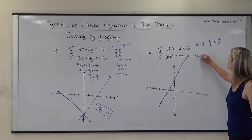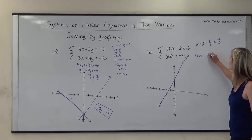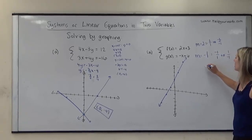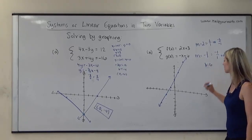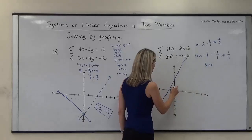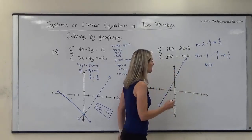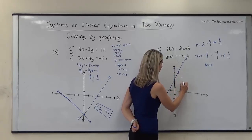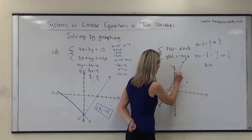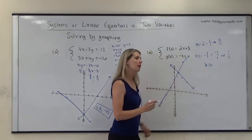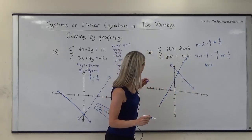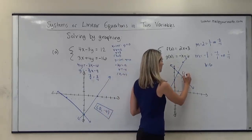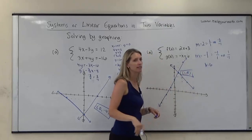For the second line, we have a slope of negative 1, which I can consider as negative 1 over 1 or 1 over negative 1, and a y-intercept of 6. So I start at 6 on the y-axis and go down 1 to the right 1 repeatedly. These two lines intersect at what appears to be (1, 5), so that is the solution to this system.